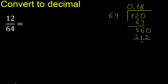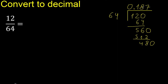Subtract. There is no number, therefore complete — always complete with 0. 64 multiplied by which number? 64 multiplied by 8 is greater, therefore multiply by 7.